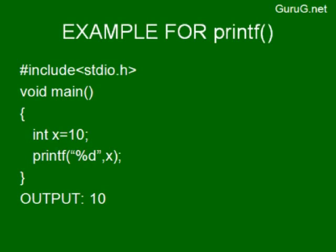In the printf statement, inside double quotes, the format specifier %d indicates the data type of the variable to be displayed. Since x is an integer and initialized to 10, the value 10 will be displayed. The format specifier tells the compiler what type of value to expect and display in the output.